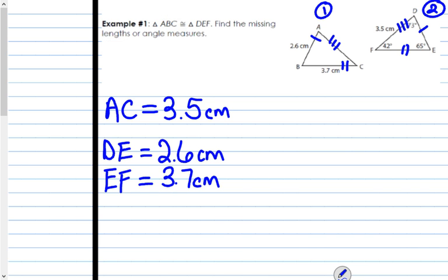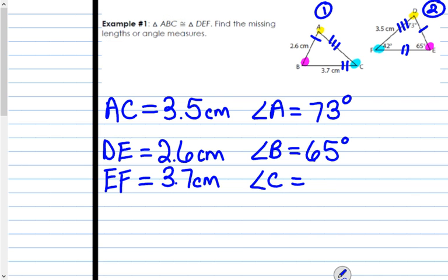So the corresponding sides of congruent triangles are congruent. The same is true for the angles. Angle A is equal to angle D, angle B is equal to angle E, and angle F is congruent to angle C. We don't know the measure of angle A, but A is congruent to D, and we know that D is 73, so angle A is 73 degrees. We don't know the measure of angle B, but it's congruent to angle E. Since angle E is 65 degrees, angle B is 65 degrees. And we don't know the measure of angle C, but it's congruent to angle F. Since angle F is 42 degrees, angle C is 42 degrees. That's what it means by corresponding parts of congruent triangles are congruent.